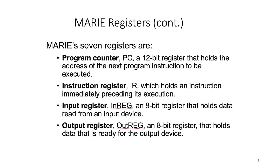The instruction register, shortened to IR, holds an instruction immediately preceding its execution. The next one is called the input register, INREC — an 8-bit register that holds data read from an input device. Another register is the output register, OUTREC, which is also an 8-bit register that holds data ready for the output device.